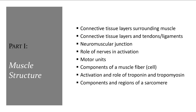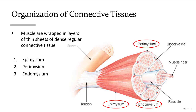For muscle structure, specifically about skeletal muscle: muscles have several layers of connective tissue within and surrounding them. These wrappings of dense regular connective tissue separate muscle from adjacent tissue, bundle muscle cells into groups, and wrap each muscle cell individually.